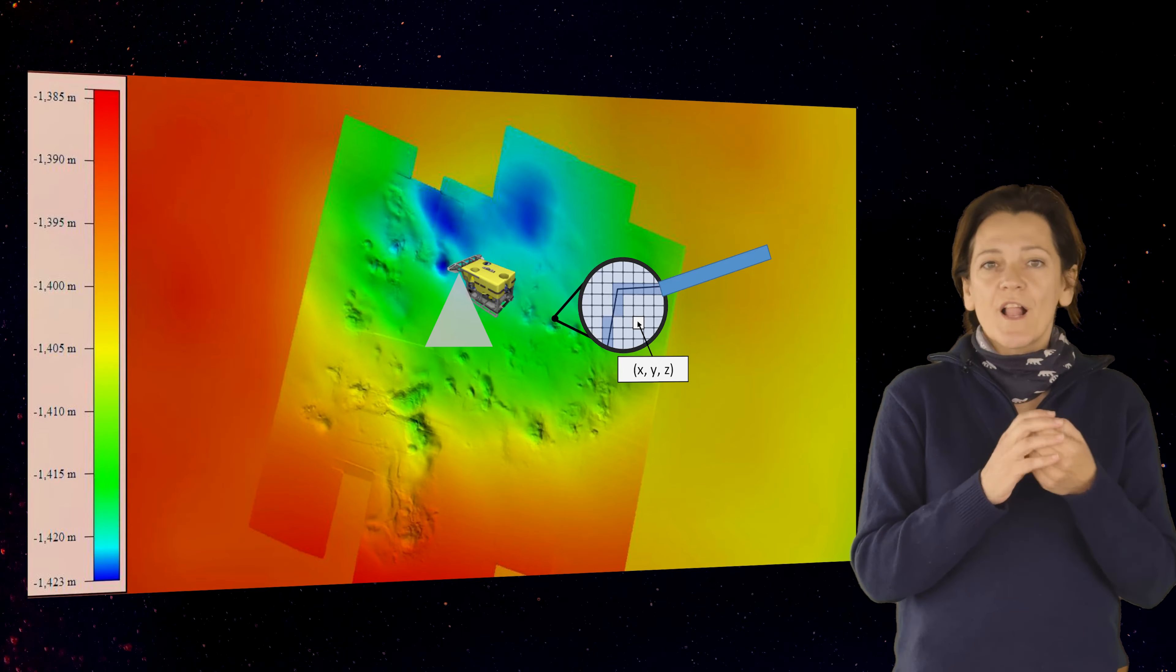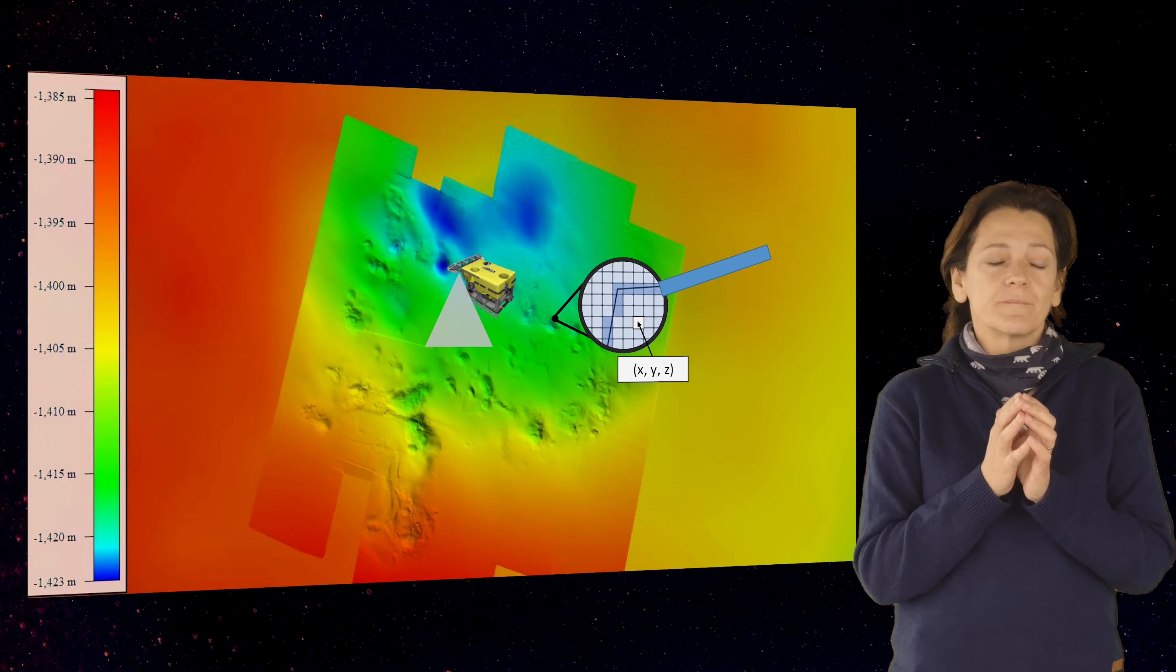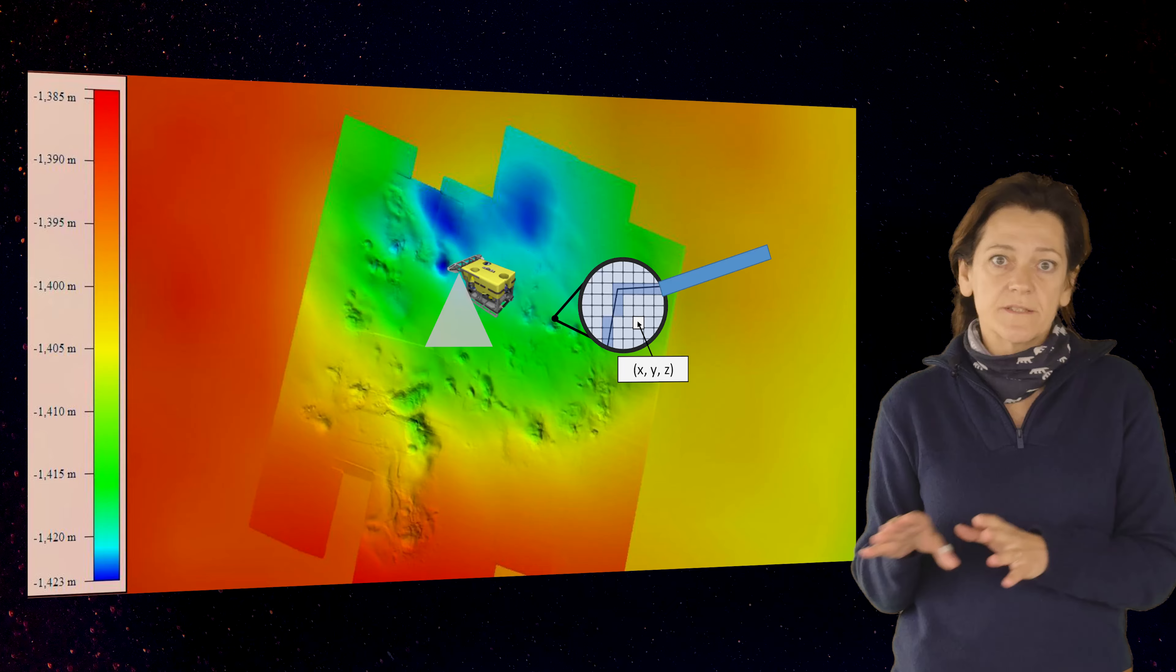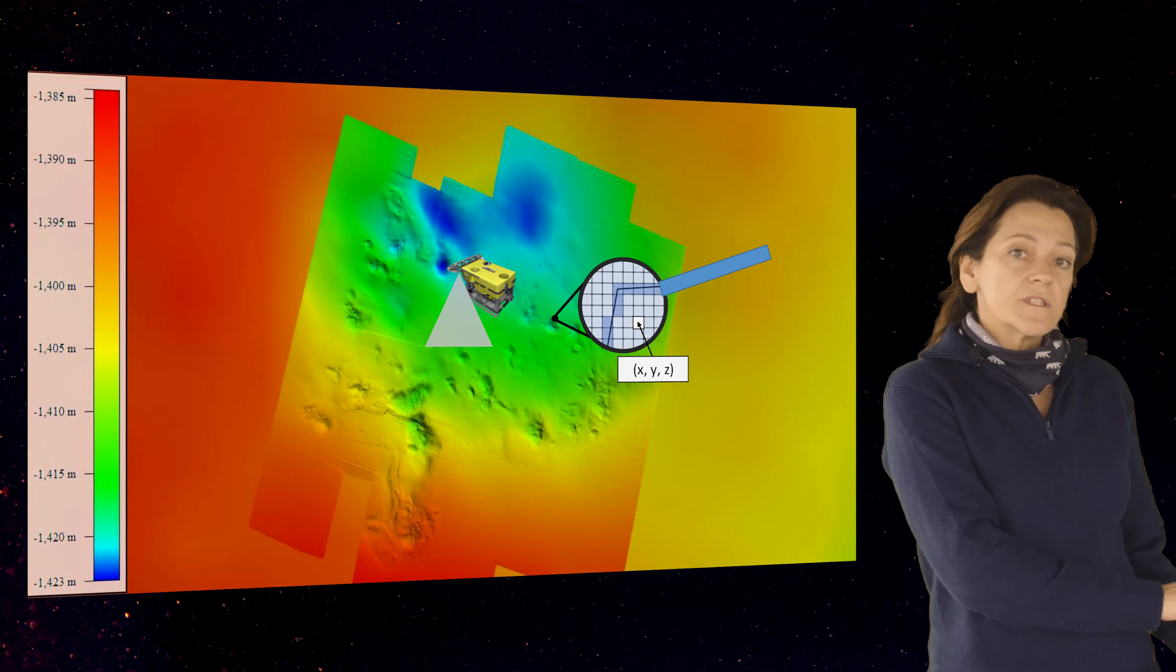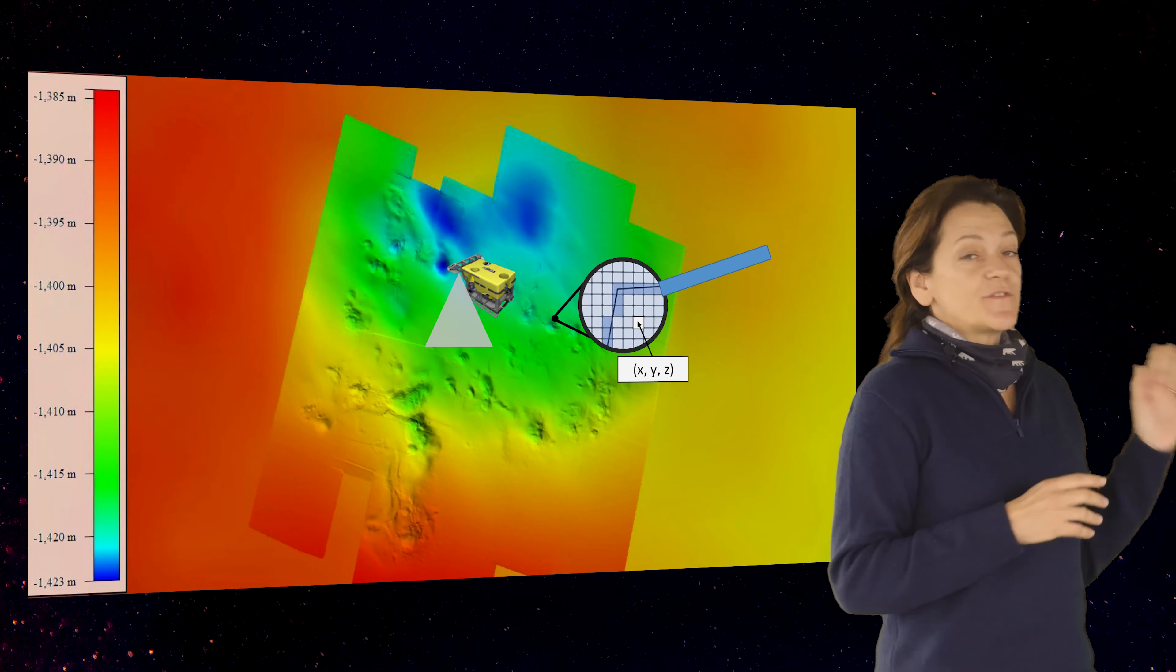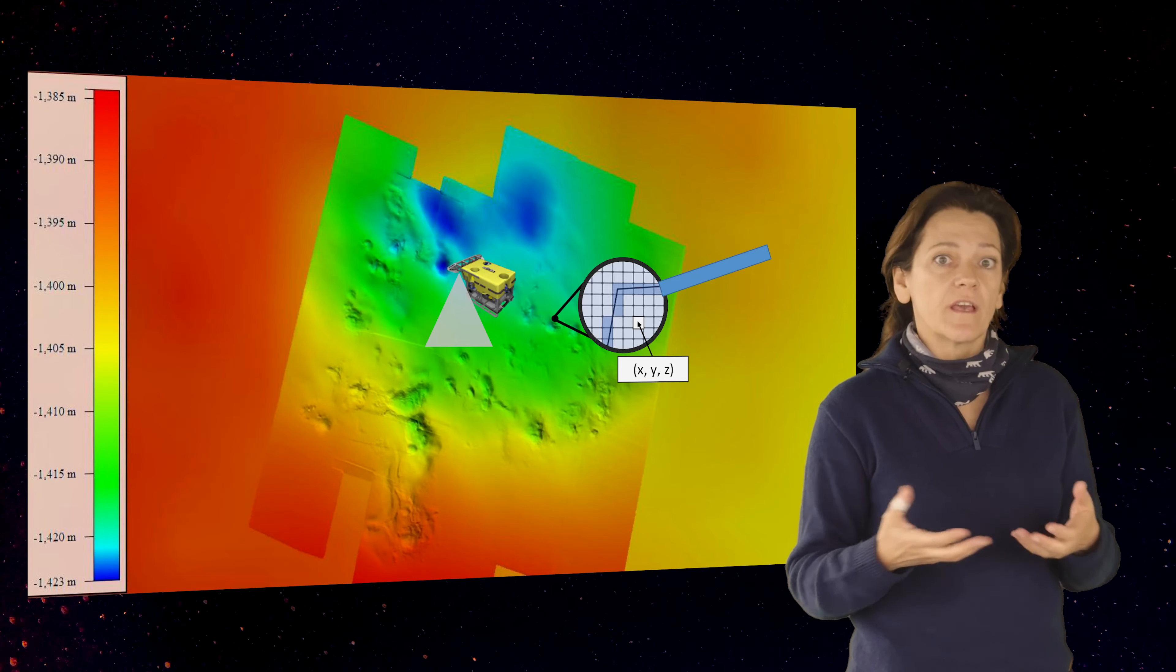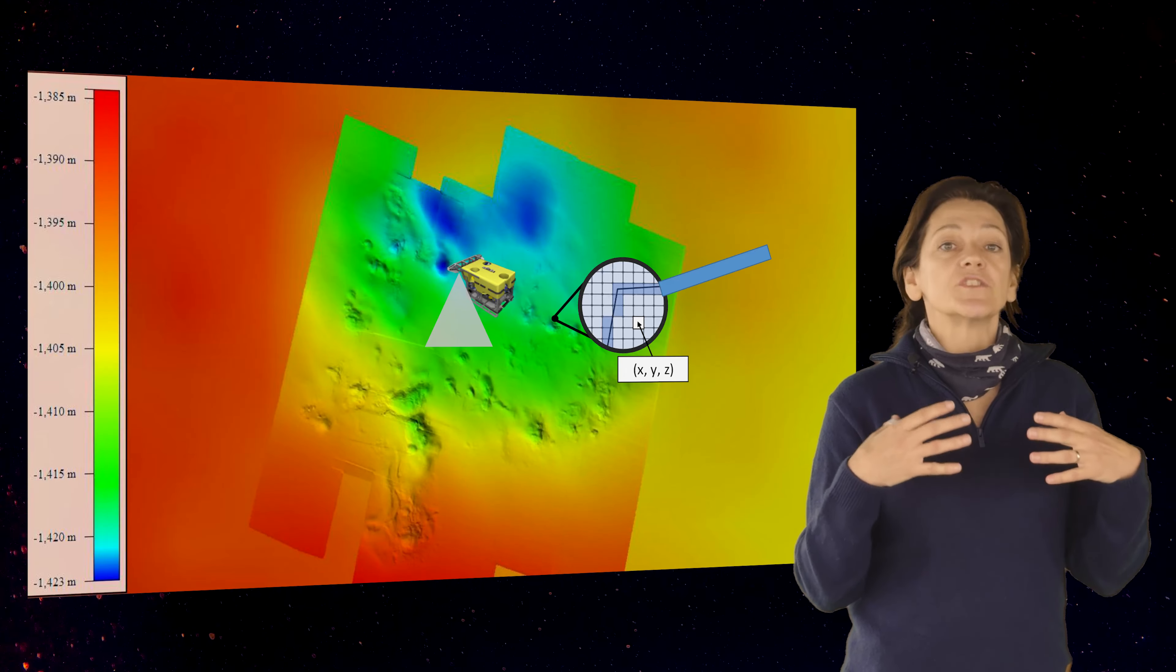But another important advancement that technology gave us to reach a higher resolution is the possibility to use this multi-beam echosounder on ROV, on underwater vehicles, remotely operated vehicles or underwater autonomous vehicles. In this way the multi-beam can get closer to the seafloor and can get a resolution that is even sub-meter resolution. If you look at this feature, this depression that is more or less 10 meters deep and 300 meters in diameter, and you perform a survey using an ROV equipped with a multi-beam echosounder, you can see that the detail can increase a lot, and that we can reach a sub-metric resolution.